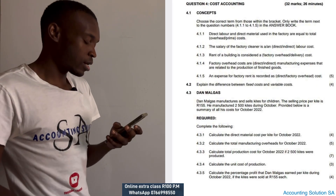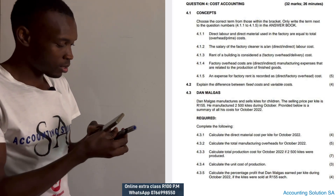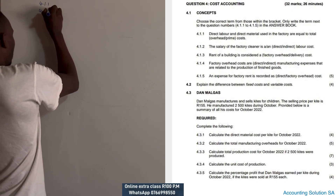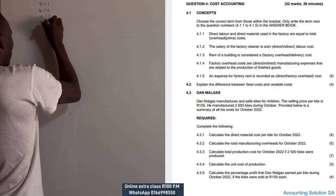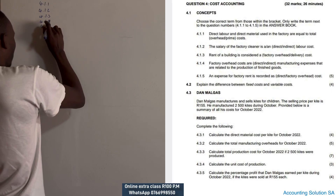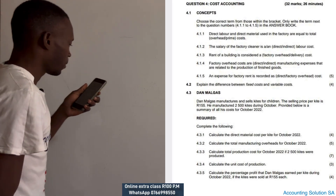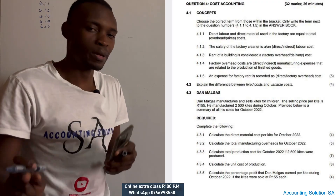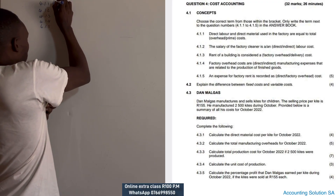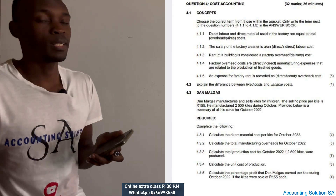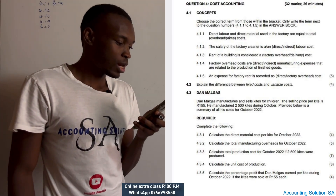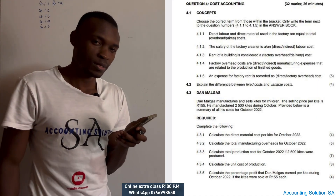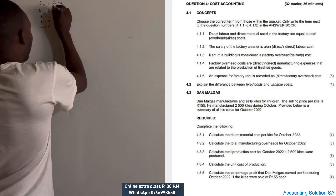Now let's try to answer question 4.1.1 and 4.1.2. They said direct labor and direct material used in the factory are equal to prime cost — remember, prime cost is direct material plus direct labor. For 4.1.2, the salary of a factory cleaner is indirect labor, not direct. A cleaner is indirect.